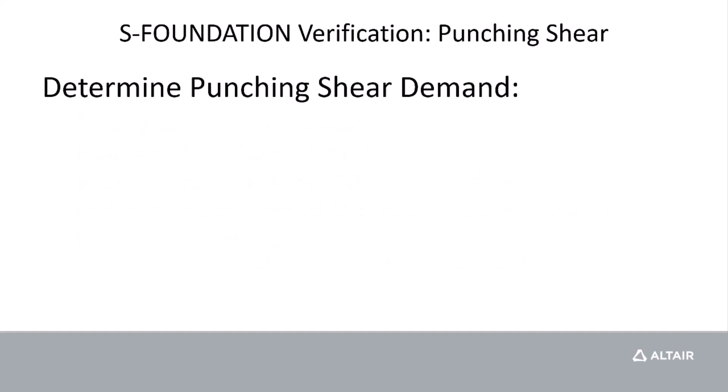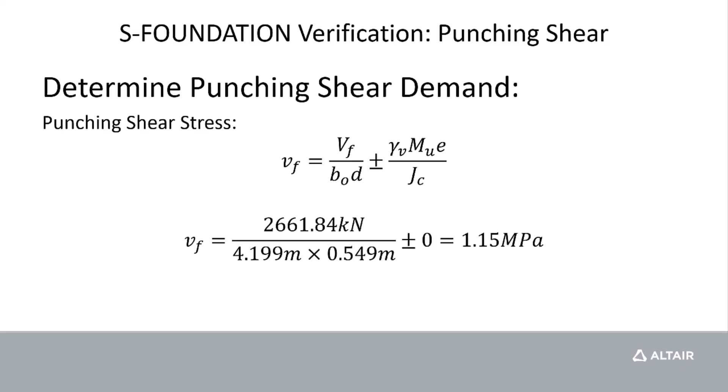And then we can determine our punching shear demand from that, calculating the punching shear stress using this formula here. And we can actually ignore the right-hand side because we don't have any moments or eccentricities due to the type of loading that we have. So we can calculate the punching shear stress, or the demand from punching shear, or two-way shear, as 1.15 MPa. And luckily for us, the concrete resistance for two-way shear is greater than the demand.